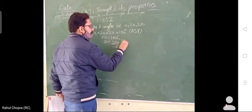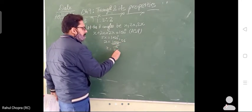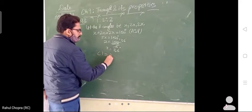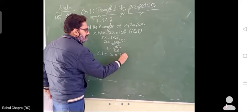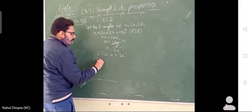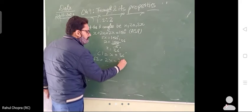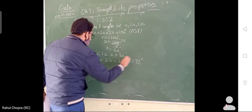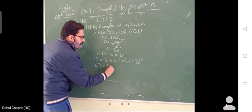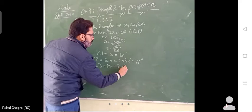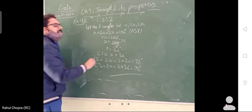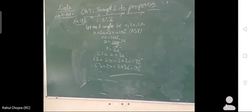X is equal to 36 degrees. Angle 1 is X, so angle 1 is 36 degrees. Angle 2 is 2X, so 2 into 36 is equal to 72 degrees. Angle 3 is also 2X, so 2 into 36 is equal to 72 degrees. Just go through it. If you are finding any difficulty, ask me.